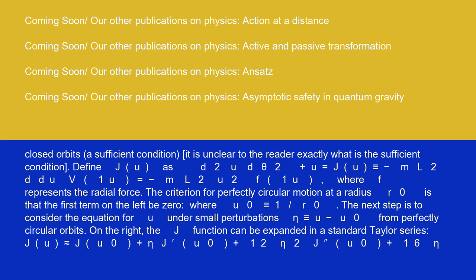Define J(u) as d²u/dθ² plus u equals J(u) is identical to minus (m/L²)(d/du)V(1/u) equals minus (m/L²)u²F(1/u), where F represents the radial force. The criterion for perfectly circular motion at a radius r₀ is that the first term on the left be zero, where u₀ is identical to 1/r₀. The next step is to consider the equation for u under small perturbations η is identical to u minus u₀ from perfectly circular orbits.